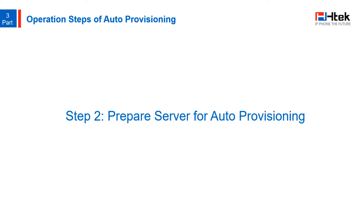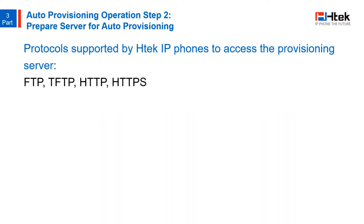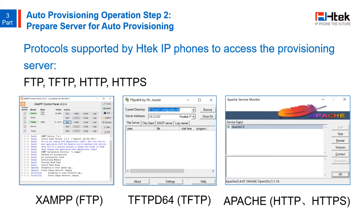Now you have your configuration files and resource files ready. The second step is to prepare a server for auto-provisioning — a place for you to put those files, ready for download. HTEC IP phones support using FTP, TFTP, HTTP, and HTTPS protocols to access the provision server to download files. In order to use these protocols to download files from the server, you could use applications like Apache, TFTPD, or XAMPP, which support these protocols. In this video, we won't go into further details about how to use these applications. After configuring the suitable server with the corresponding protocol, you can download configuration files and resource files from the configured server.